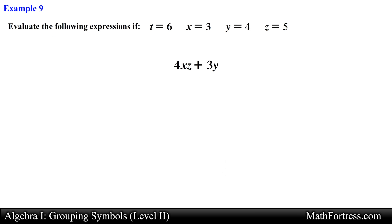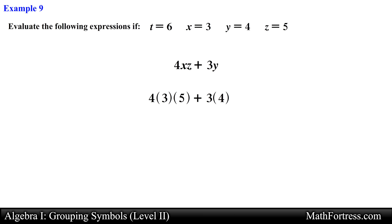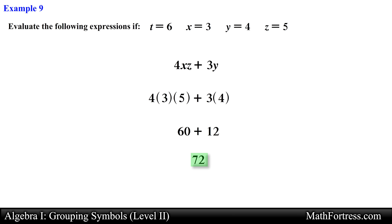The expression 4xz plus 3y. We substitute each variable: x equals 3, z equals 5, and y equals 4. We simplify any products or divisions first. We simplify 4 times 3 times 5 which equals 60, and then we simplify 3 times 4 which equals 12. Finally we add these two quantities: 60 plus 12 simplifies to 72.